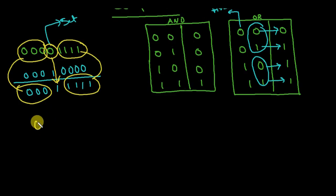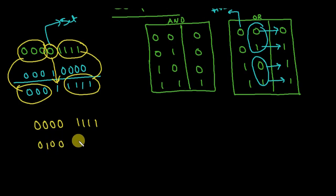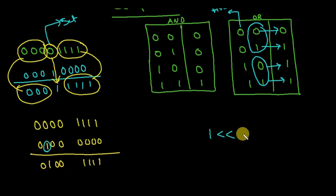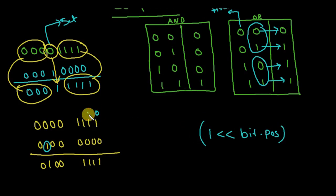What if I want to change the bit position? For example, if I want to set a different bit, I place one at that position and zero everywhere else. To do this efficiently, I'll shift one to the left by the desired bit position. So if I want position three, I shift one left three times, placing the one exactly at position three.